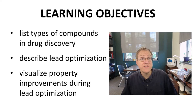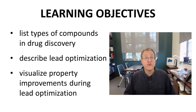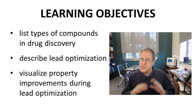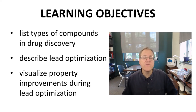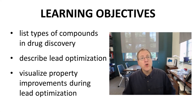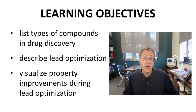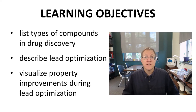We have listed the types of compounds encountered in drug discovery. We have briefly described the general ideas of lead optimization. Finally, we have visualized how properties improved during lead optimization with radar charts.